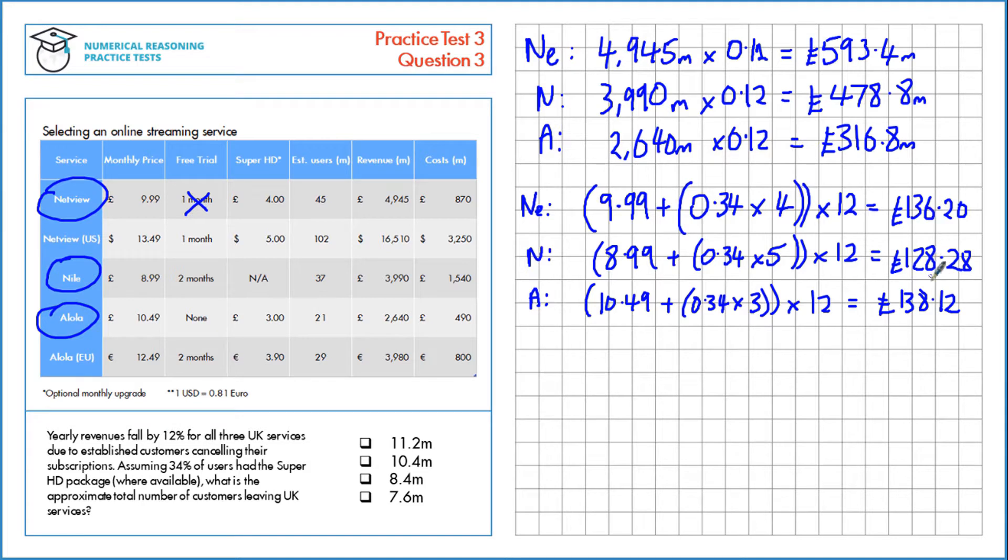Now that we have the average spend of each of these users, we need to divide the total revenue of all the people that left by the average amount spent by those people to find out an approximation for the number of people that left the service.